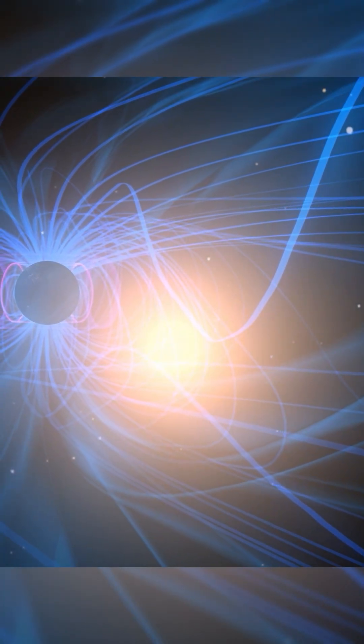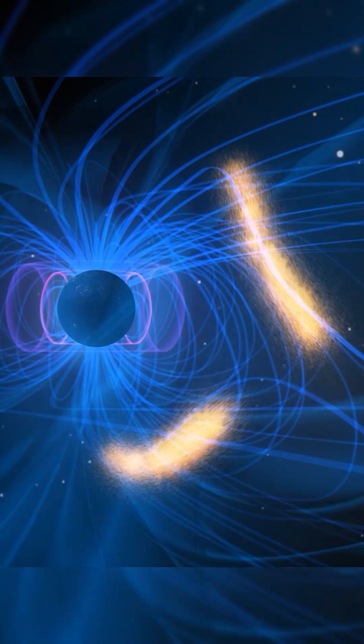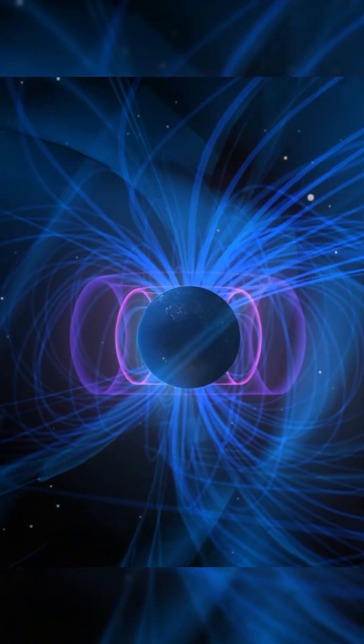Magnetic reconnection happens in various places throughout the magnetosphere, but it is most easily studied at the polar cusps.